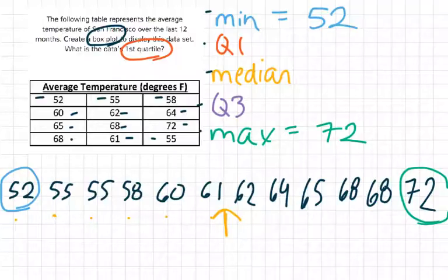Since we have an even number of values, we have to take whatever number would be right in the middle of 61 and 62, which is 61 and a half, or 61.5. So our median equals 61.5.